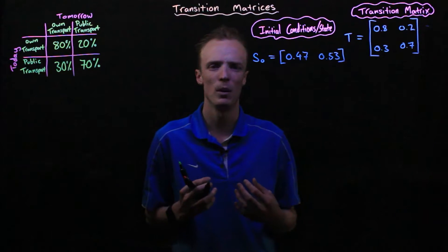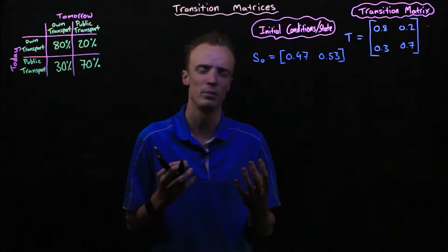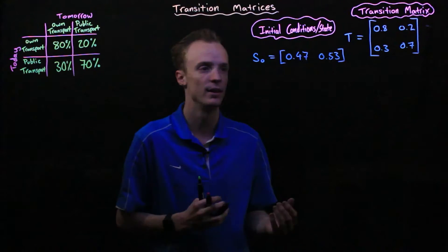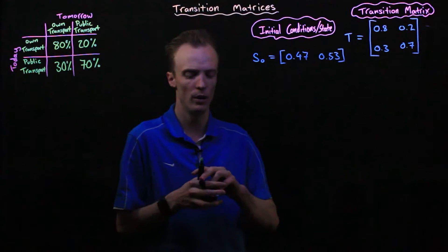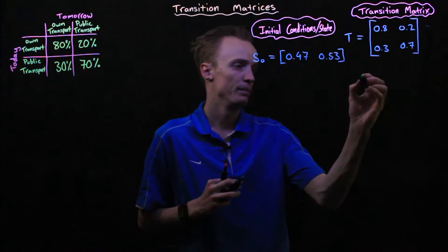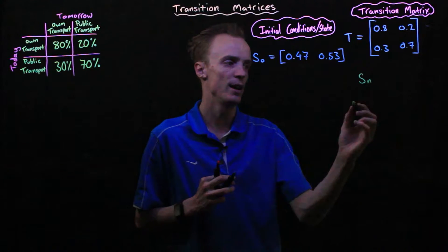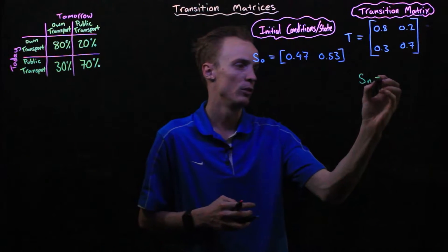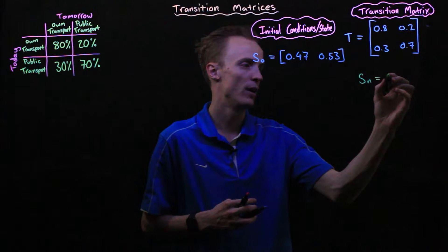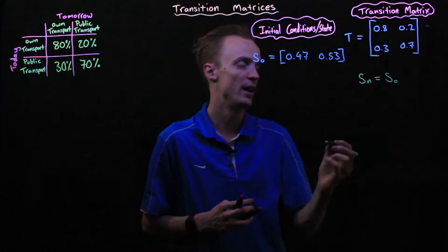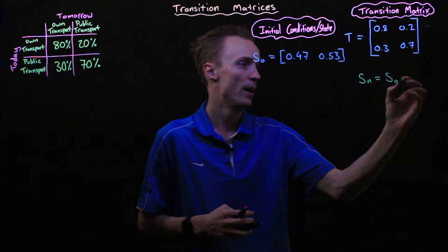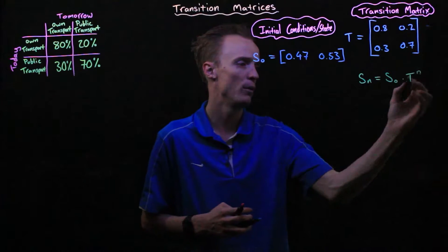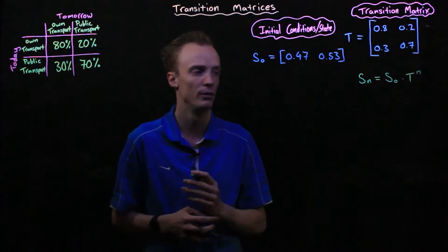We can now make predictions about what's going to happen to our state matrix from one day to the next. We find the new state matrix after n days by multiplying the initial state matrix S₀ by the transition matrix T raised to the power of n.